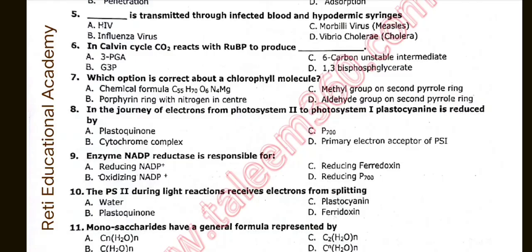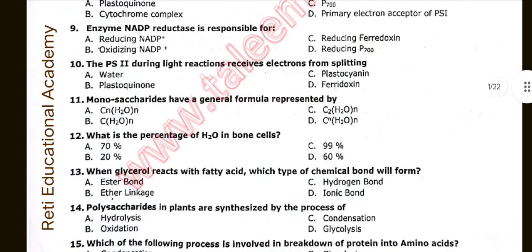Question number ten: The PS2 during light reactions receives electrons from splitting water. Option A is correct. Question number eleven: Monosaccharides have a general formula represented by. The correct option is B: C(H2O)n. Question number twelve: What is the percentage of H2O in bone cells? The correct option is B: 20 percent.